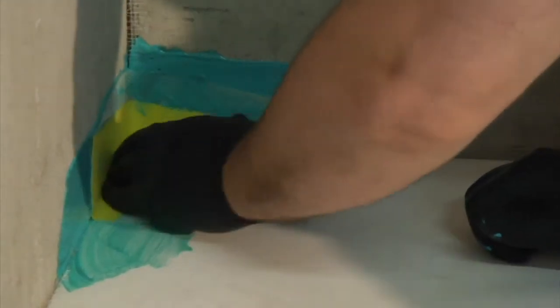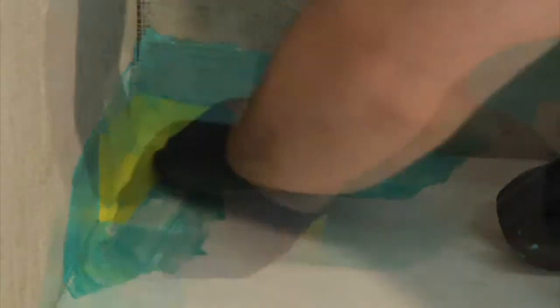When applying the waterproofing, get a good amount of the liquid on your brush. It's necessary to apply the liquid onto the pan and the walls, then set the tape onto it, and then brush all the bubbles out.